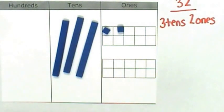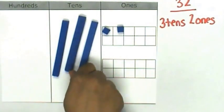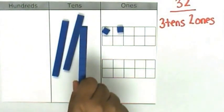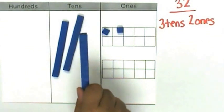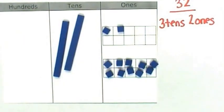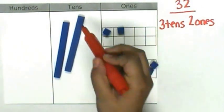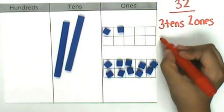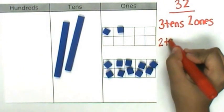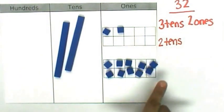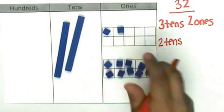Now let's decompose one of these tens into ten ones. 32 is composed of two tens and 10, 11, 12 ones.